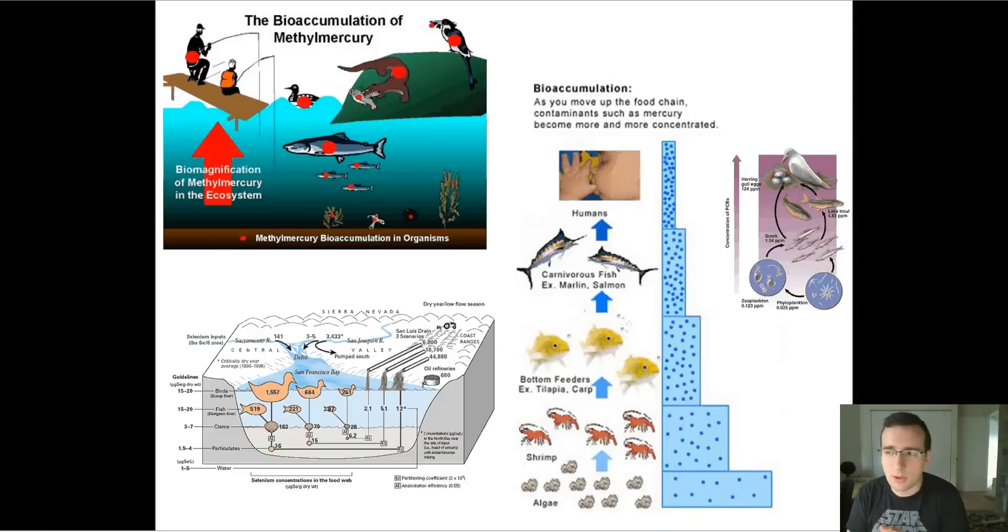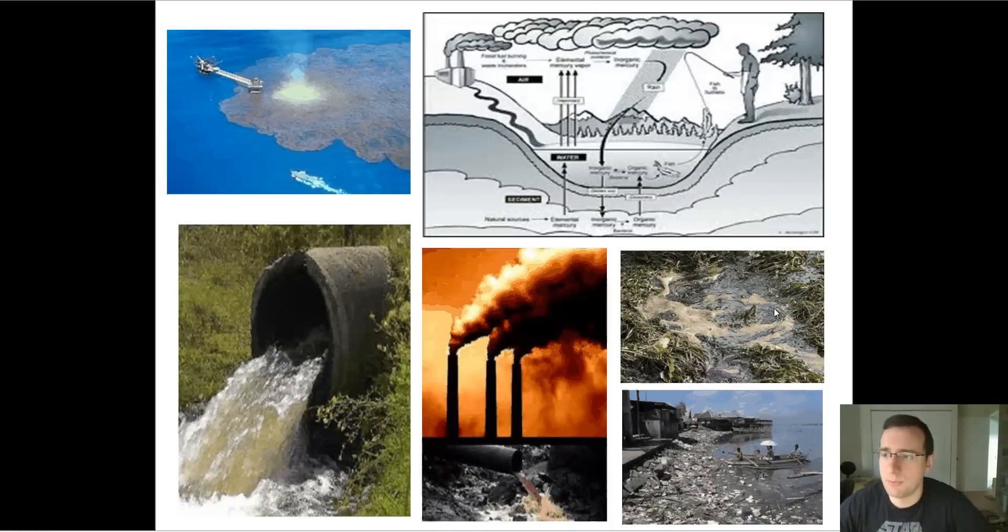And that's actually going to be very important when we talk about in the next video the benefits and drawbacks of choosing where to eat in the food web if you have the choice as a predator, and we do as humans. And of course, this is also important because when we are putting chemicals in the environment, you can understand the consequences that it has for life.